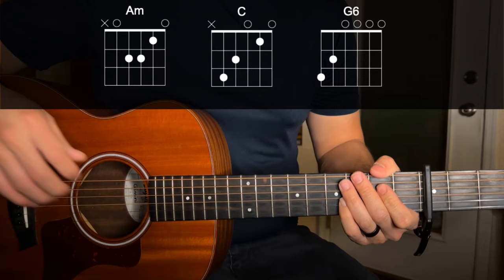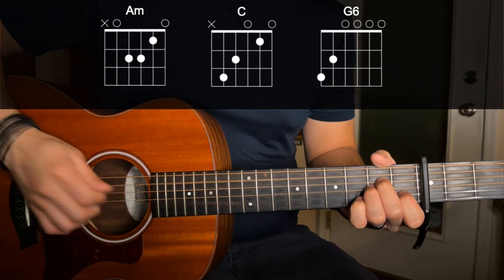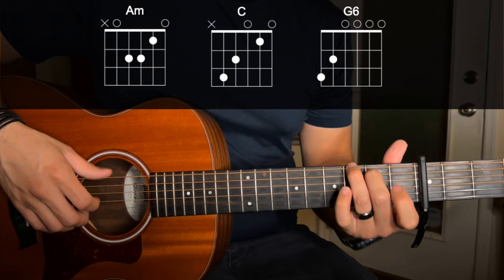So the intro and the verse only use three chords. They're going to be A minor, C, and then a G6. G6 is just the third fret on the low E, second fret on the A string. The rest are open.